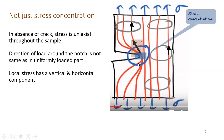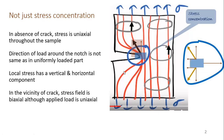The direction of the load around the notch is not the same as in a uniformly loaded sample. The local stress near the discontinuity has both a vertical and a horizontal component. Uniaxial stress is converted to biaxial stress, with an additional horizontal component generated near the stress raiser.